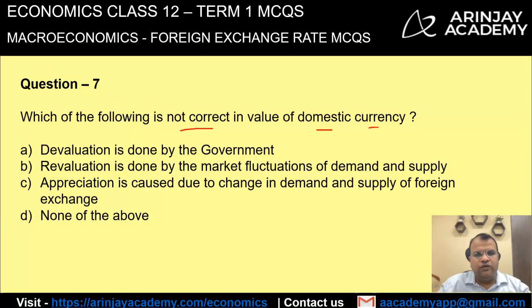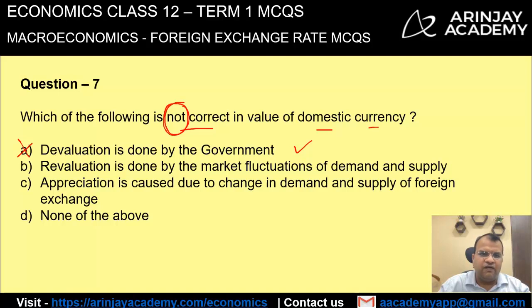Which of the following statements is not correct? Devaluation is done by the government — this is correct, so it cannot be the right answer since we are looking for what is not correct. Revaluation is done by market fluctuations of demand and supply — this is wrong, because revaluation is again done by the government. Therefore, the correct answer in this case is B.